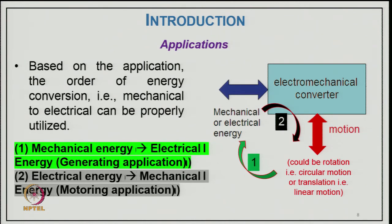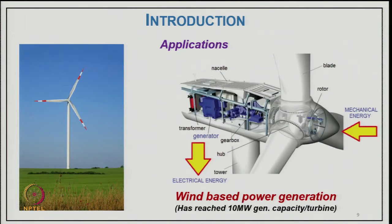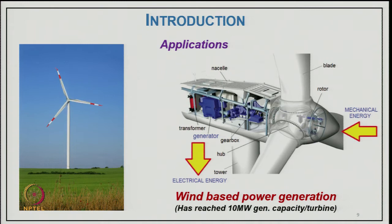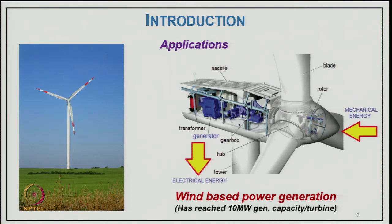Based on applications, the order of energy conversion — mechanical to electrical or electrical to mechanical — can be properly utilized. Mechanical energy converted to electrical is the generator application; electrical to mechanical is the motor application. A typical example of generation is wind power-based generation, which has reached a single unit capacity of 10 megawatts. In many systems a gear is used because designing the generator at high speed reduces the machine size, weight, and losses, increasing efficiency.